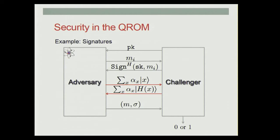To be formal, let's define what it means to be secure for the case of signatures. The challenger sends over a public key to the adversary. The adversary is allowed to ask for signatures on messages; these queries can only be classical. But the adversary is also allowed to query the random oracle on a superposition — basically, the adversary sends over a superposition of possibly all inputs and receives the superposition of corresponding outputs in return. Then the adversary sends over a message forgery candidate, and outputs 0 or 1 depending on whether this is a valid forgery.